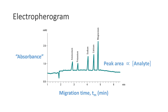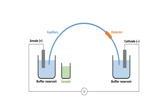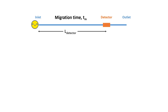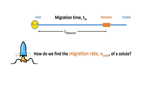Let's take a look at the migration time. The migration time is the time it takes for a solute to migrate from the point of introduction to the detector. Knowing the migration time and the length to the detector, we can use this information to figure out the migration rate of a solute. Recalling what we have learned from high school physics, we know that the velocity of a solute is equal to the distance traveled divided by the time span.